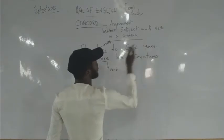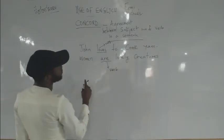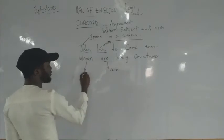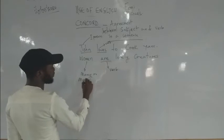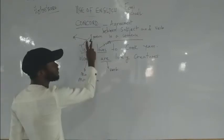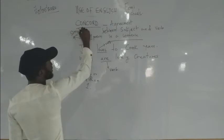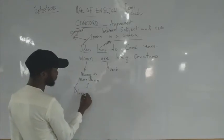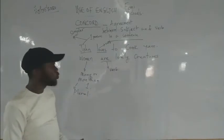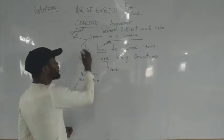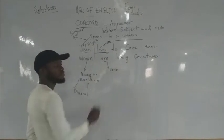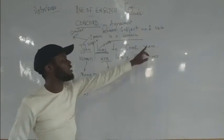John loves to cook. John is one person, so John is the subject, and 'loves' is the verb. Women are many — more than one. In English, when something is one, we say it's singular. When it's many, we say it's plural. So John is the subject performing the action of loving to cook, and 'loves' is the verb.